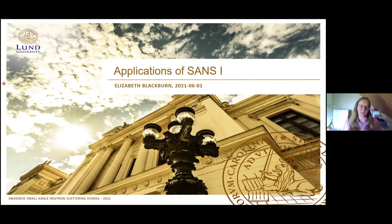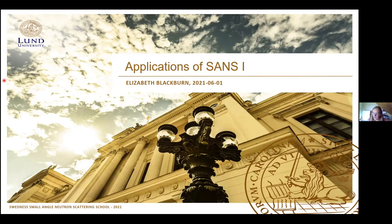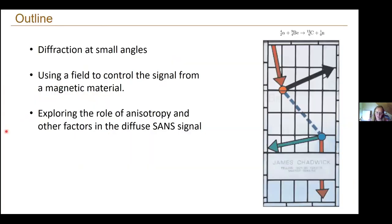Good afternoon, everybody. Welcome back. So this afternoon you have two lectures on applications of small angle neutron scattering. I'll be giving the first one, and Judith Houston is giving the second one. My examples are going to focus on aspects of magnetic small angle neutron scattering that I touched on yesterday. We're going to look at examples of diffraction at small angles, then using a field to control the signal and exploring the role of anisotropy in the diffuse signal. I'll also raise some other issues that can come up during experiments.